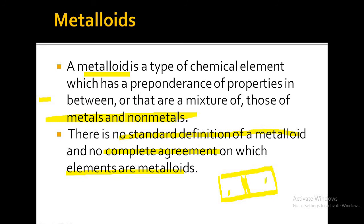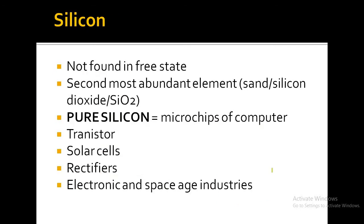Metalloids are basically found at the middle part of the periodic table. On one side are the metals, the other side is the nonmetals, and at the extreme right side there are inert elements. One of the metalloids is silicon, which is not found in free state.